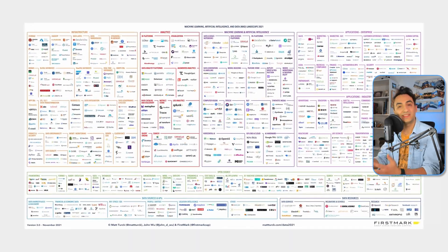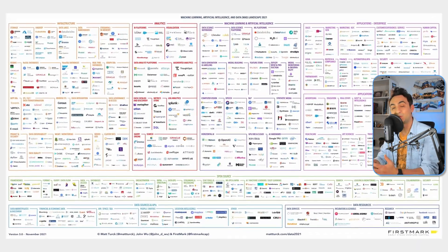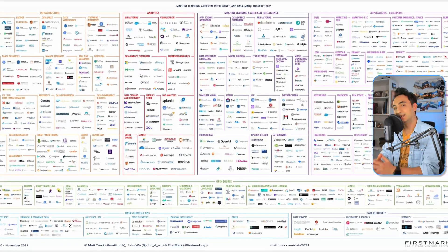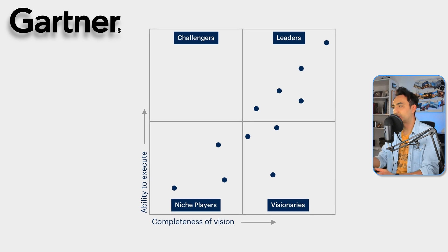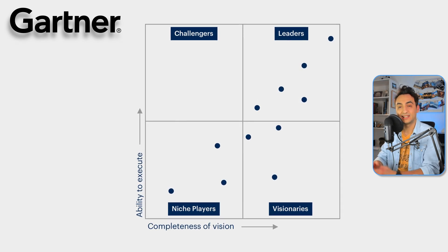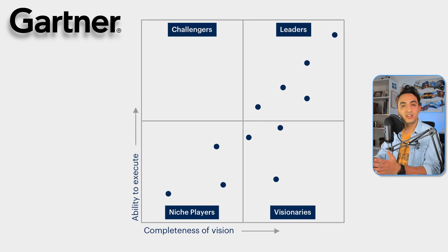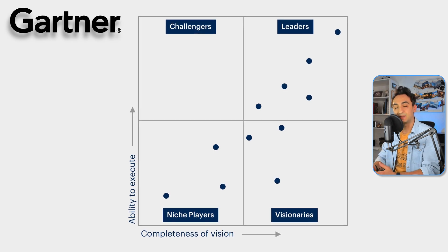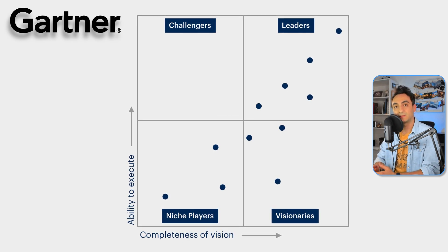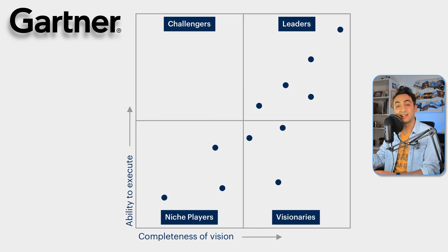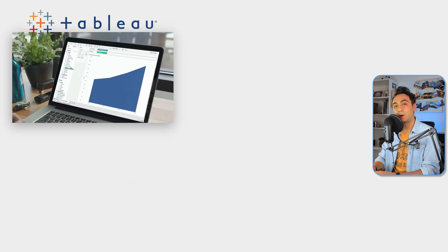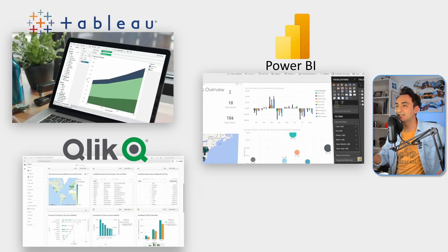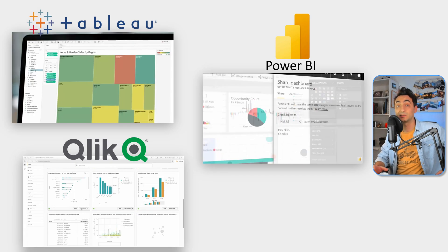So now the question is: what are the best tools for data visualizations? A leading research company called Gartner publishes every year the Gartner Magic Quadrants to show who are the leading products in a specific domain. If you check the Magic Quadrants for analytics and business intelligence platforms for the last 10 years, you can almost always see the same leaders: Tableau, Power BI, and QlikView since 2012.